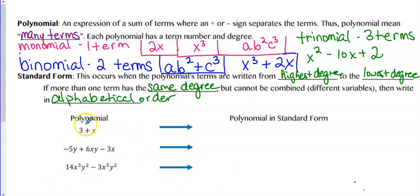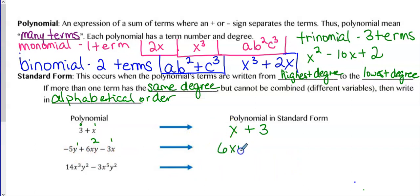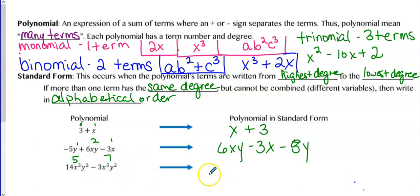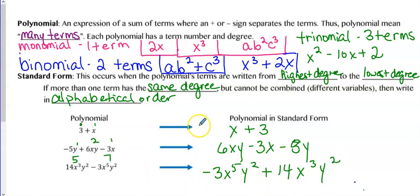Let's look at these polynomials. The first one, 3 plus X, is a binomial. The 3 is zero degree and X is one degree, so in standard form we write X plus 3. For the next one, 6XY is second degree, negative 3X is one degree, and negative 5Y is one degree — so we put 6XY first, then minus 3X, then minus 5Y because X comes before Y alphabetically. For the last example, the seventh degree term comes first even though it's negative, and the fifth degree term is second. Always put the highest degree first.